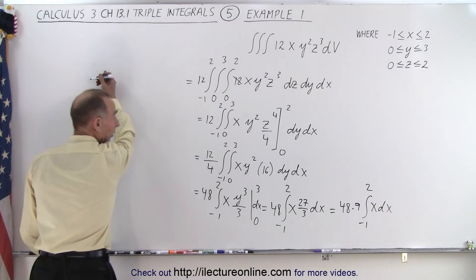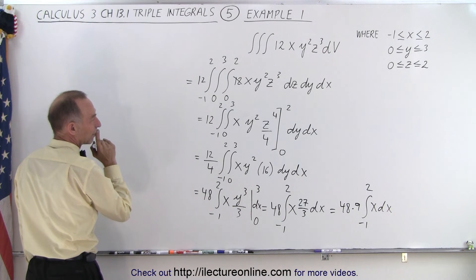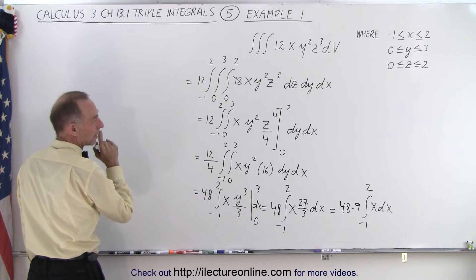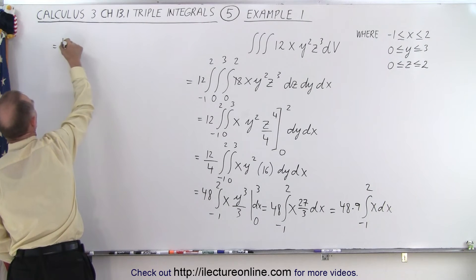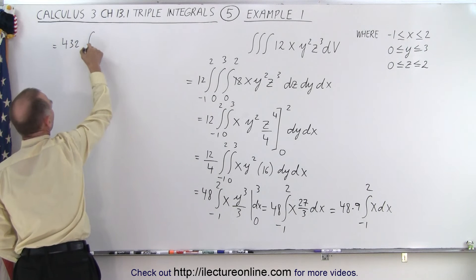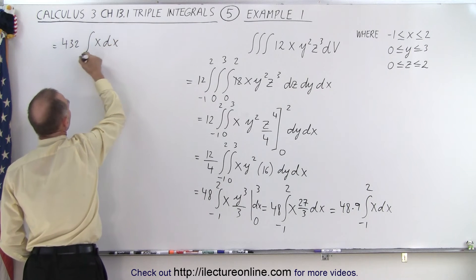So next let's continue over here. So now what's 9 times 48? That's 480 minus 50, that's 430 plus 432. So we end up at 432 times the integral of x dx from -1 to 2.